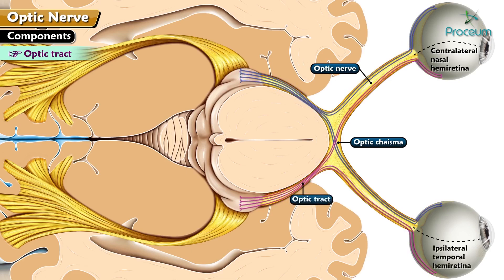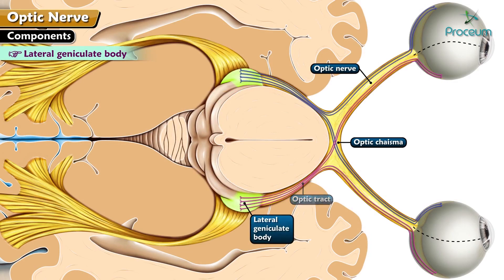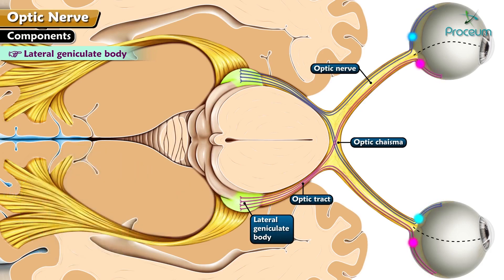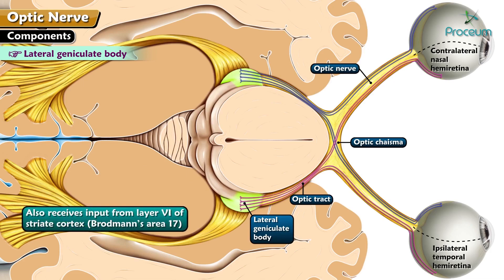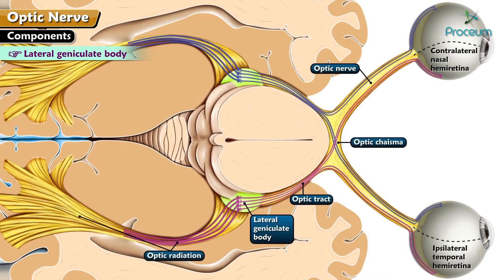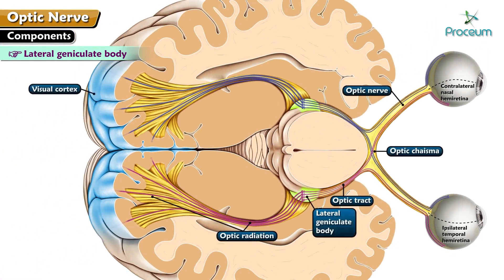The optic tract projects into the ipsilateral lateral geniculate body, pre-tectile area, and superior colliculi. The lateral geniculate body is a relay station of the optic tract and is structurally made of a six-layered nucleus. Layers 1, 4, and 6 receive crossed fibers, while layers 2, 3, and 5 receive uncrossed fibers. It receives fibers from the ipsilateral temporal hemiretina and the contralateral nasal hemiretina, and also receives input from layer 6 of the striate cortex, which corresponds to Brodmann's area 17. It projects through the optic radiation, or the geniculo-calcarine tract, to layer 4 of the primary visual cortex located in Brodmann's area 17.